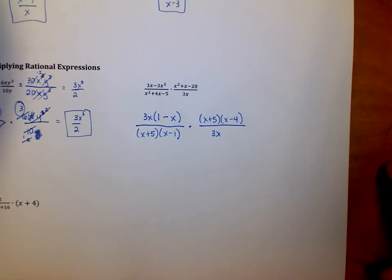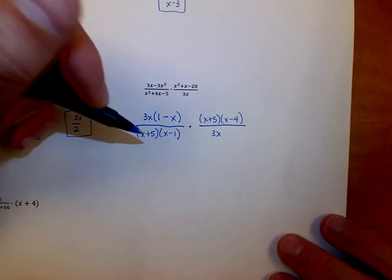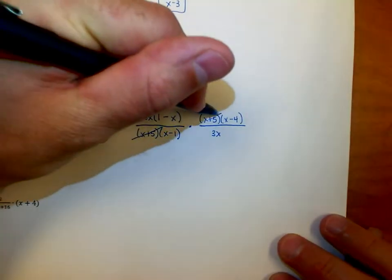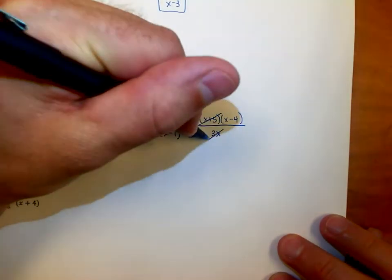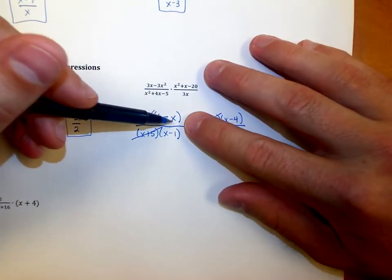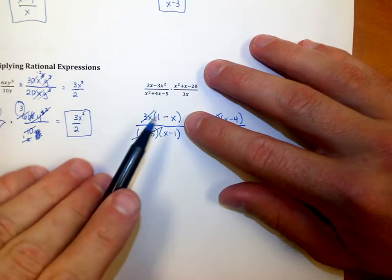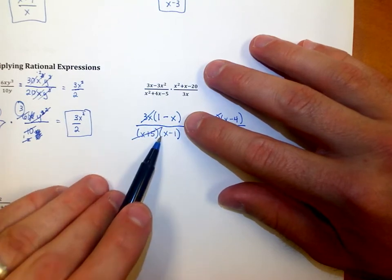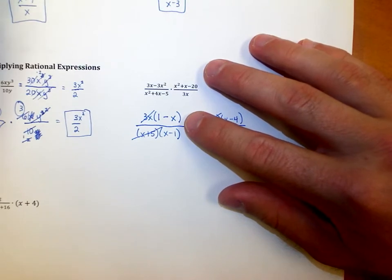Whenever I do it this way, rather than try to combine all those together and multiply them out, I'm going to look for stuff to reduce first. I notice (x + 5) goes away, and I see the 3x goes away. I also see something curious here: I have (1 - x) and (x - 1). Those look very similar. That's a positive 1 and this is negative; that's a negative x and that's positive.